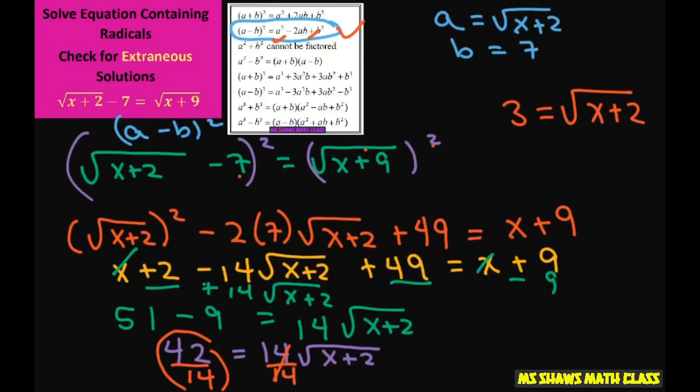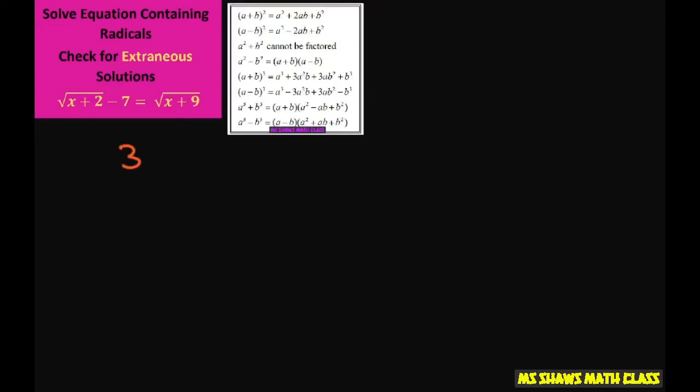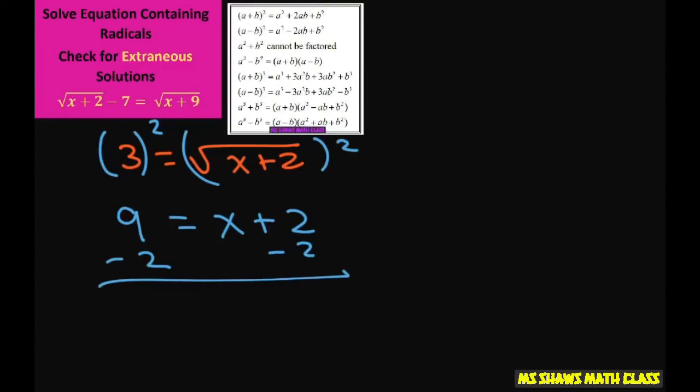So let's continue on. We have 3 equals square root of x plus 2. Now again we're going to square both sides. So we get 9 equals x plus 2. So subtract 2 from both sides of the equation and you get x equals 7.